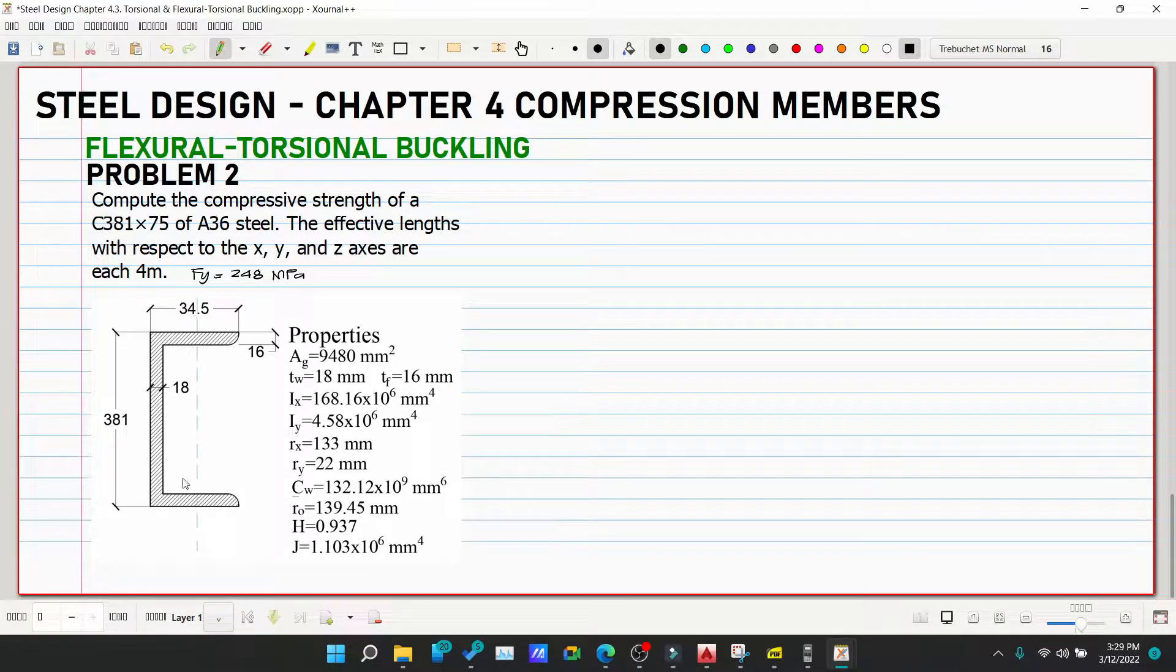The properties are given: Ag is 9480 mm², tw, tf, Ix, Iy, rx, ry, Cw is given (the warping constant), then r bar sub o is 139.45 mm, the h is given, and J is 1.103×10⁶ mm⁴.